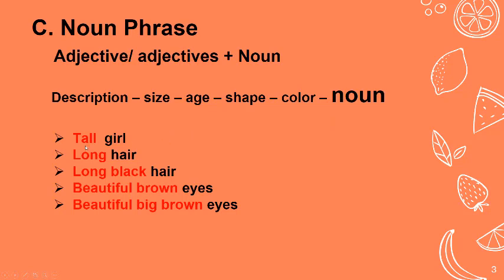Kita lihat contohnya. Tall girl — kata bendanya girl, diterangkan oleh tall — gadis yang tinggi. Long hair — rambut panjang. Kalau dua kata sifat, misalnya rambutnya panjang dan hitam: long (ukuran) dulu, baru black (warna) — long black hair. Beautiful brown eyes: beautiful (description), brown (warna), eyes. Kalau ditambah big: beautiful (description), big (ukuran), brown (warna), eyes — beautiful big brown eyes.